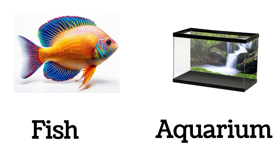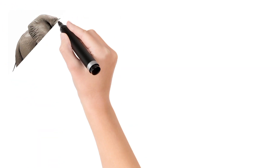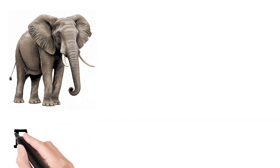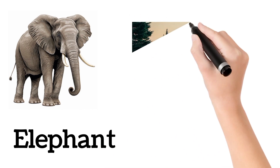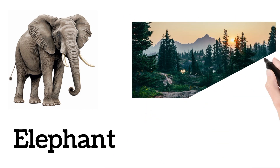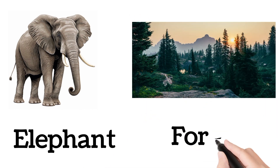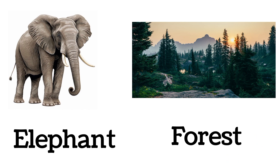Fish. A fish lives in an aquarium. Elephant. Elephant lives in a forest.